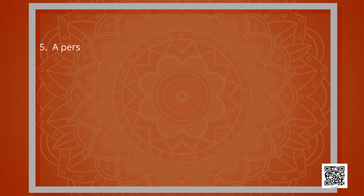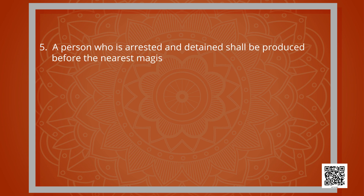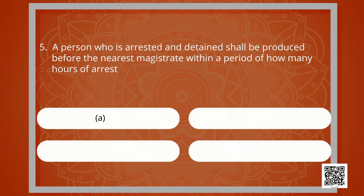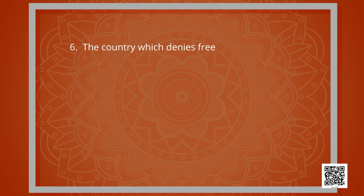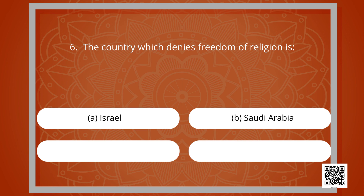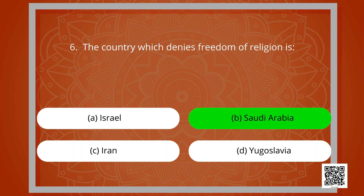A person who is arrested and detained shall be produced before the nearest magistrate within how many hours of the arrest — 20, 22, 23, or 24? The correct answer is option D: 24 hours. The next question: which country denies freedom of religion — Israel, Saudi Arabia, Iran, or Yugoslavia? The correct answer is option B: Saudi Arabia.